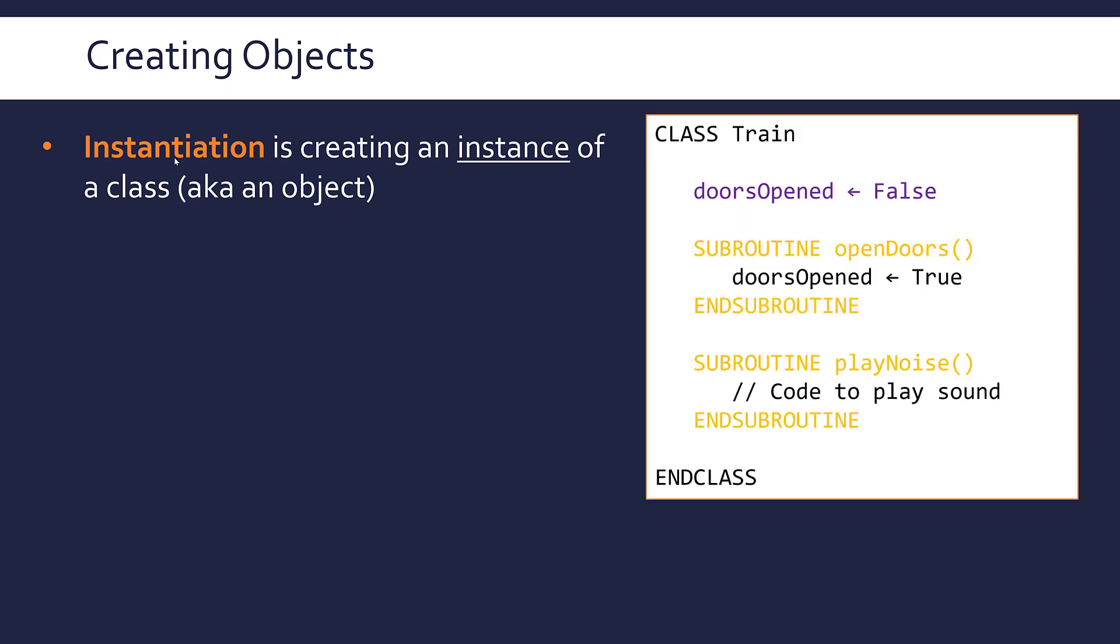For this video, let me use an example of trains. I've got a train class with one field and two methods. But just as a class, it's not very useful to us. It's only really useful once I make an object, once I instantiate an object.